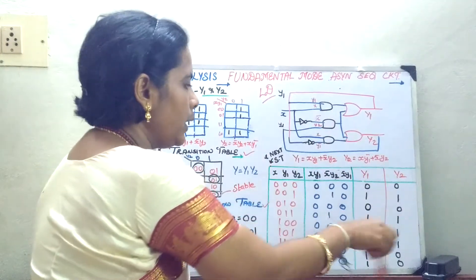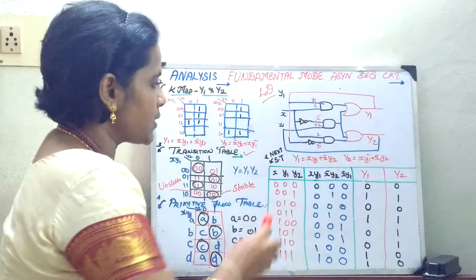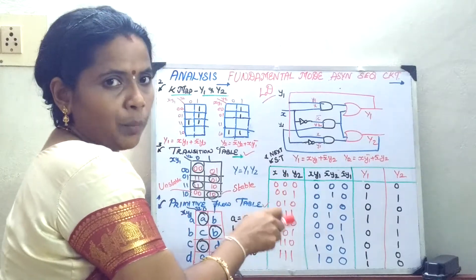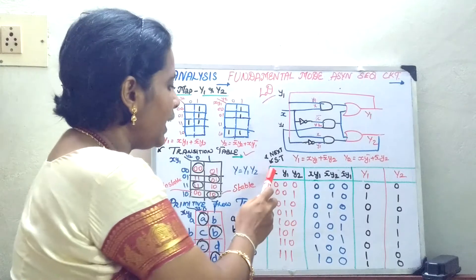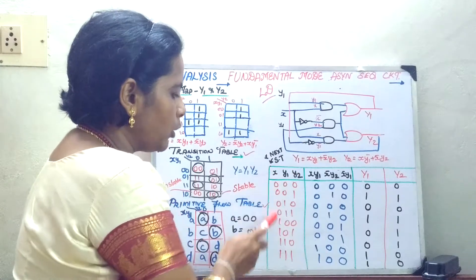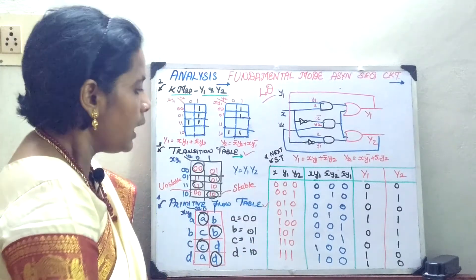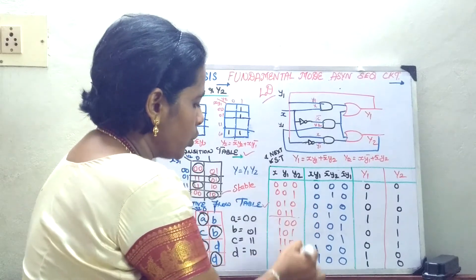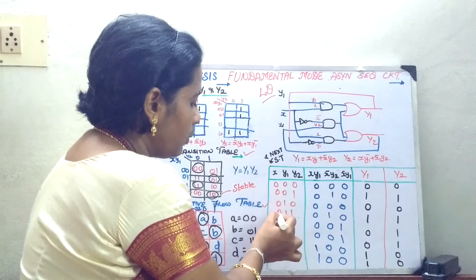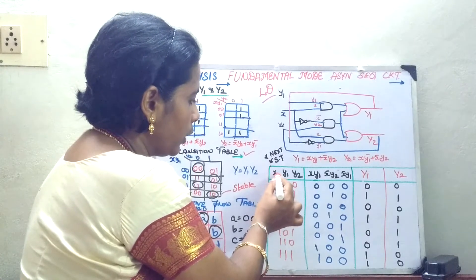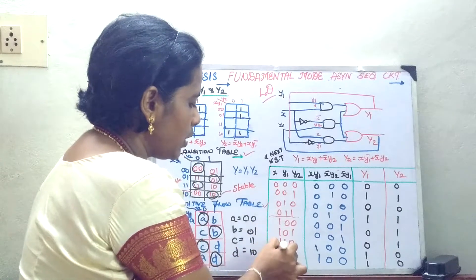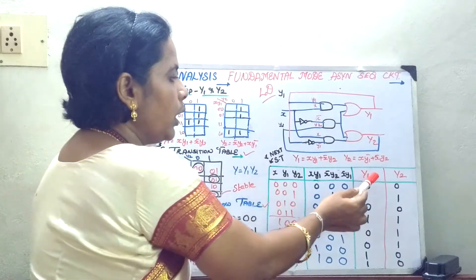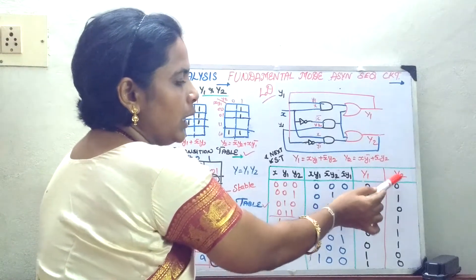Now we will move on to your next state table. The input variables are your present state or secondary variables: X, Y1, and Y2. You will write the combinations from 0 to 7. Each variable will have four states, with the secondary variables being 00 and 11. The next step is to compute the excitation variables Y1 and Y2.